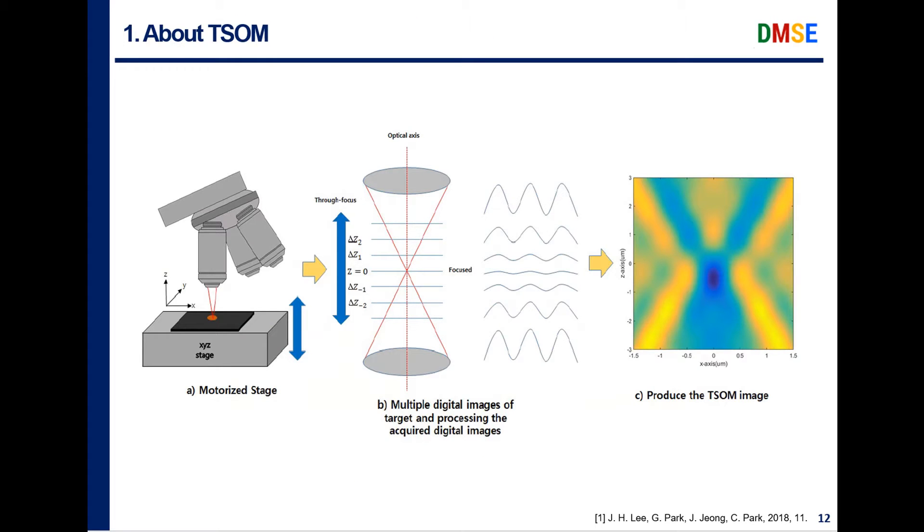As you see in this picture, this figure simply shows the image generation process of TSOM. It is demonstrated that TSOM can be utilized for 3D inspections with nanometer scale lateral and vertical sensitivity. At first, a motorized stage is moving to change its focus for the sample. And then, multiple digital images over the target are acquired and processed by using computer software. Finally, the TSOM image is produced.